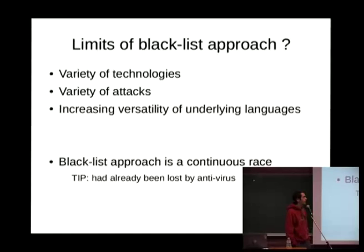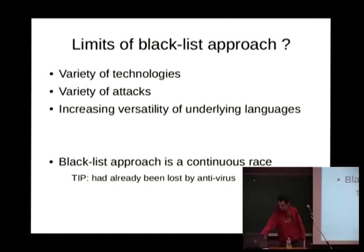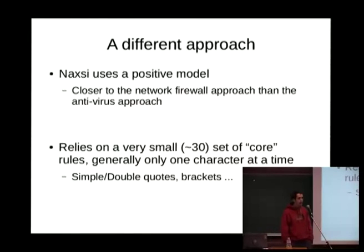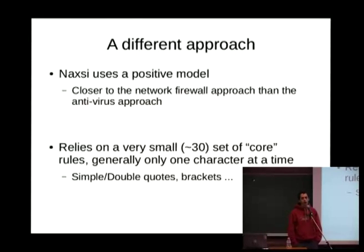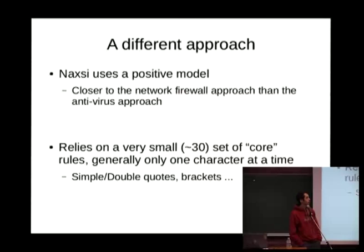This is the whole idea behind NAXI — I wanted to move away from the blacklist model for various reasons. NAXI acts in a model that is much closer to a classic network firewall than a traditional web application firewall, because it relies only on a very short core rule set. For most rules, only one or two characters are covered — characters that are used in most web attacks and exploitation techniques, such as single quotes, double quotes, brackets, parentheses, and so on.